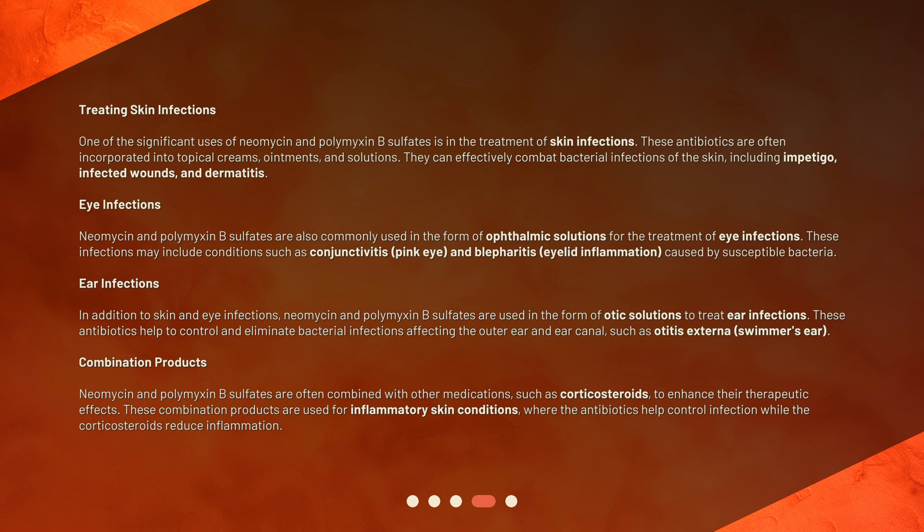Eye infections: Neomycin and polymyxin B sulfates are also commonly used in the form of ophthalmic solutions for the treatment of eye infections. These infections may include conditions such as conjunctivitis, pink eye, and blepharitis — eyelid inflammation — caused by susceptible bacteria.